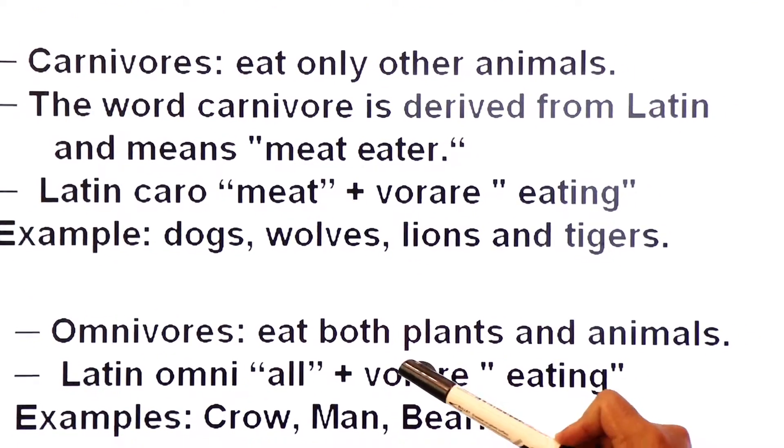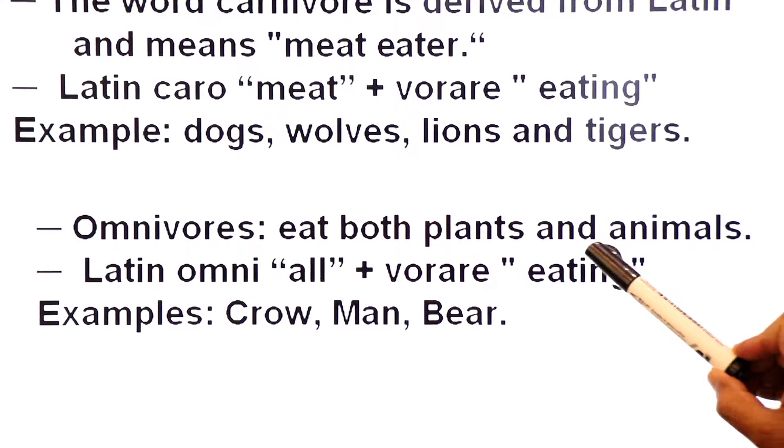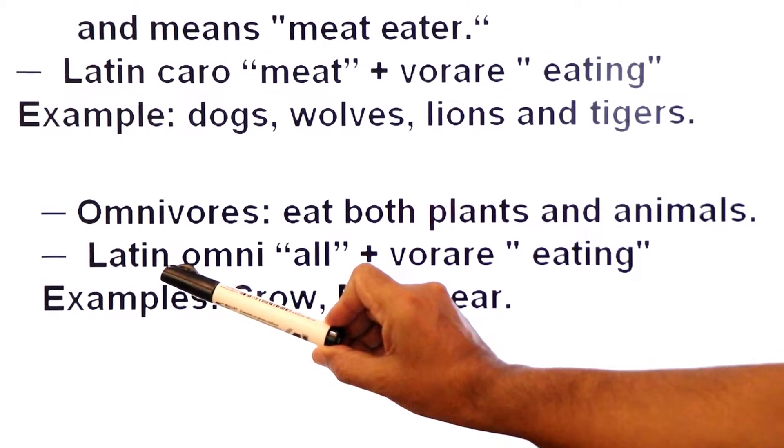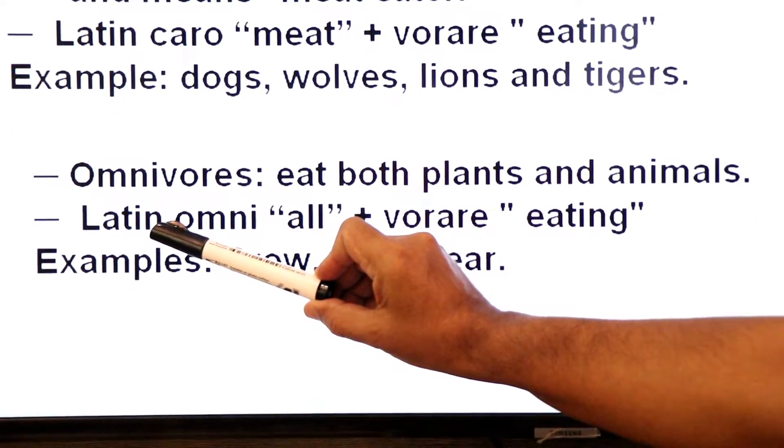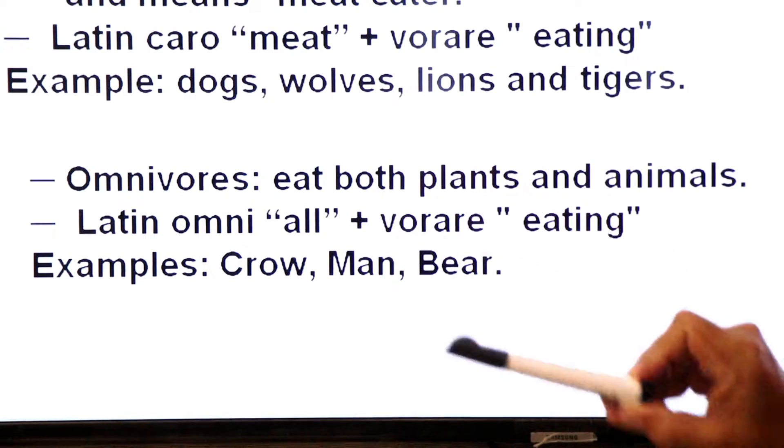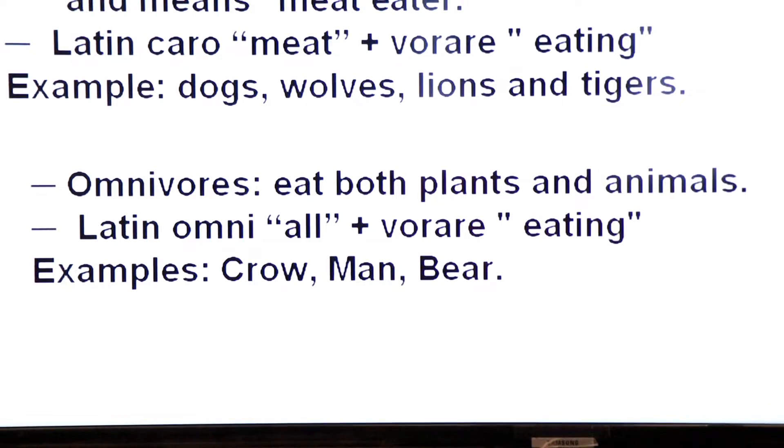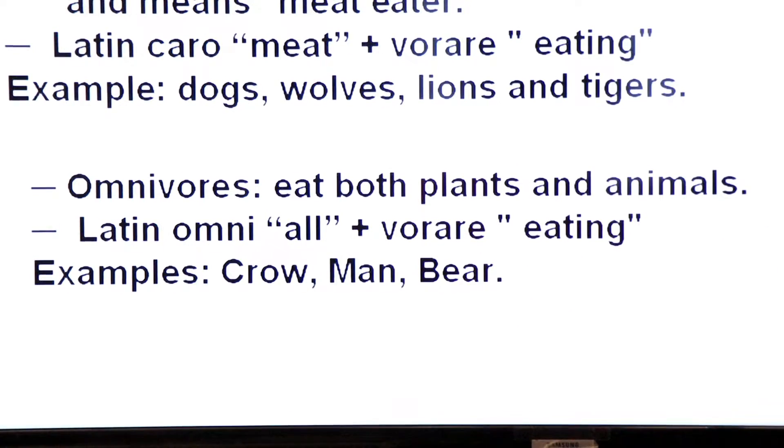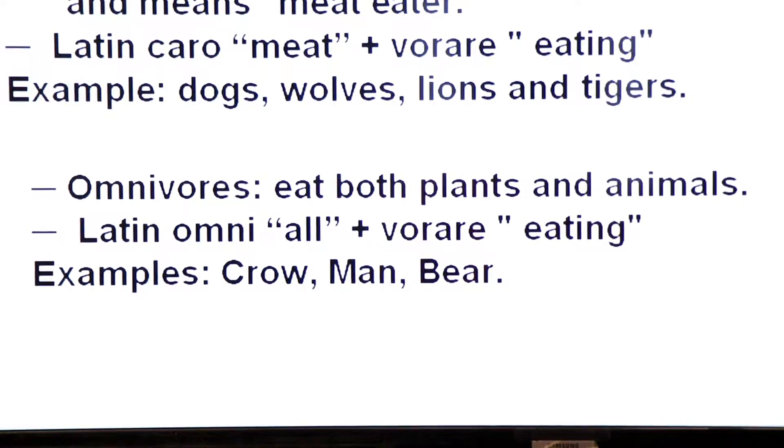Omnivores eat both plants and animals. It comes from Latin language. Omni means all plus vorare means eating. Examples of omnivores: crow, man and bear.